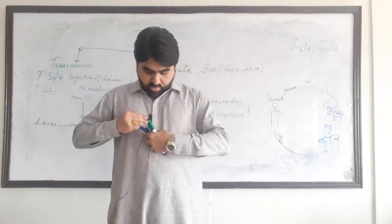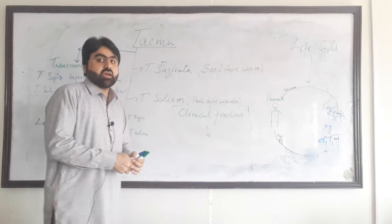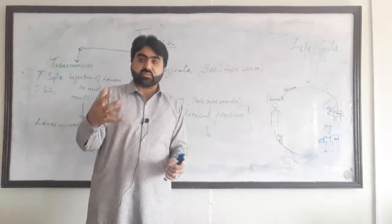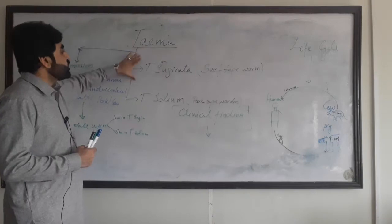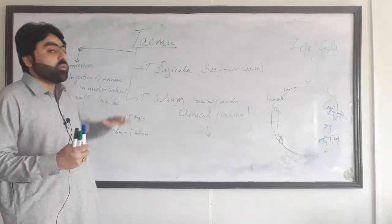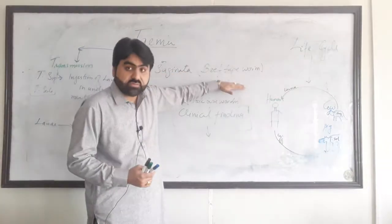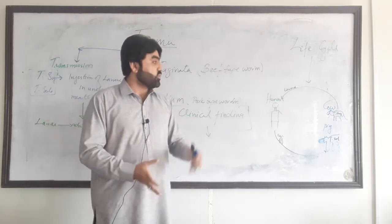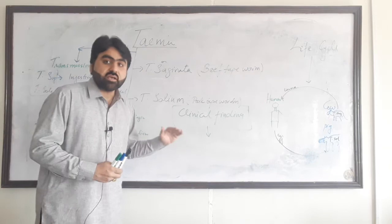This is Amanullah and you are watching my YouTube channel Dr. Aman's video. Today we are going to discuss Taenia saginata and Taenia solium, which are important parasites. There are two important species which are human pathogens: Taenia saginata and Taenia solium. Taenia saginata is known as beef tapeworm while Taenia solium is known as pork tapeworm.